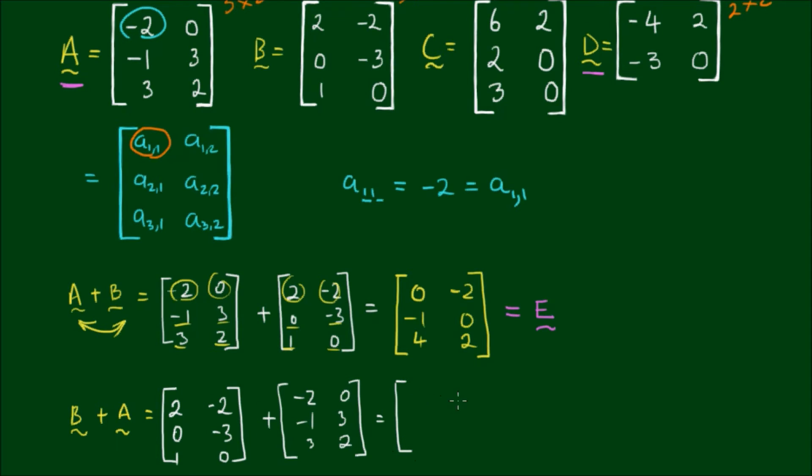So again, 2 plus negative 2 equals 0. Negative 2 plus 0 equals negative 2. 0 plus negative 1 is negative 1. Negative 3 plus 3 equals 0. 1 plus 3 equals 4, and 0 plus 2 equals 2.